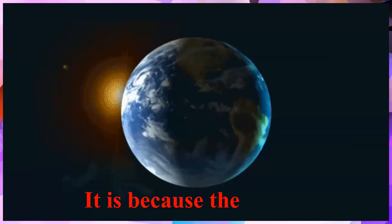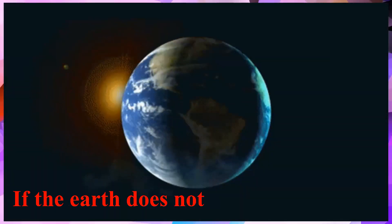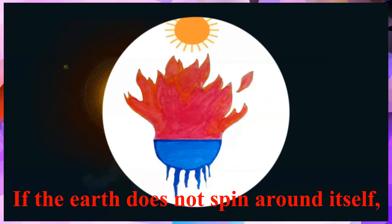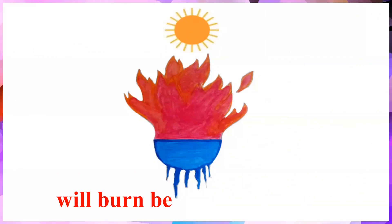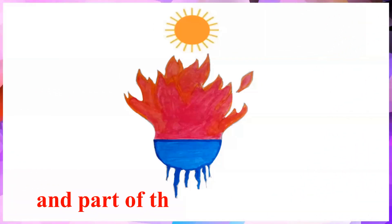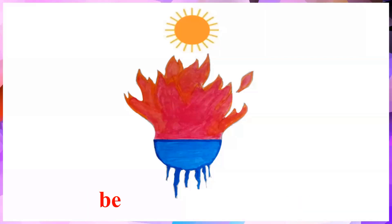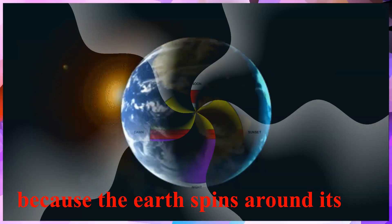It is because the earth spins around itself. If the earth does not spin around itself, part of the earth facing the sun will burn because it is too hot, and part of the earth that is away from the sun will freeze because it is too cold. That will not happen because the earth spins around itself.